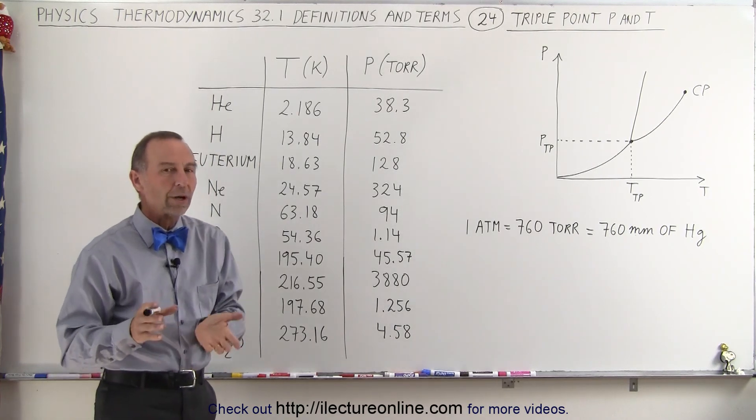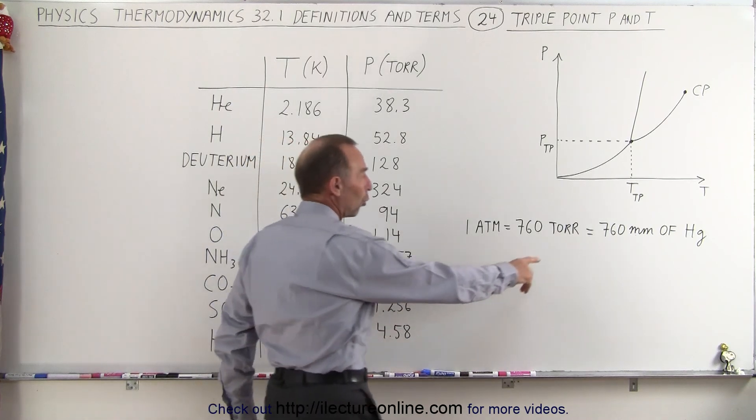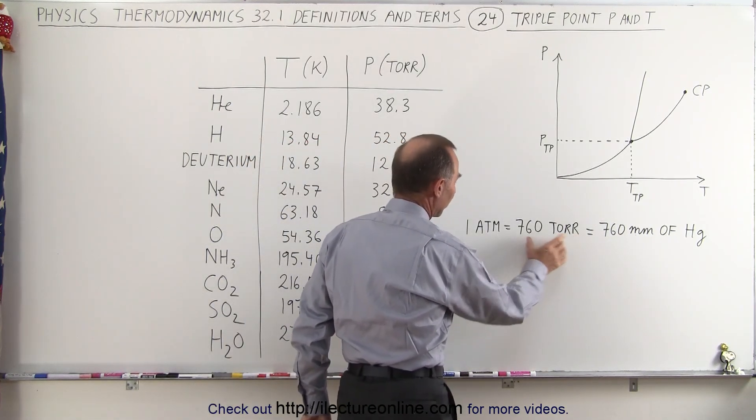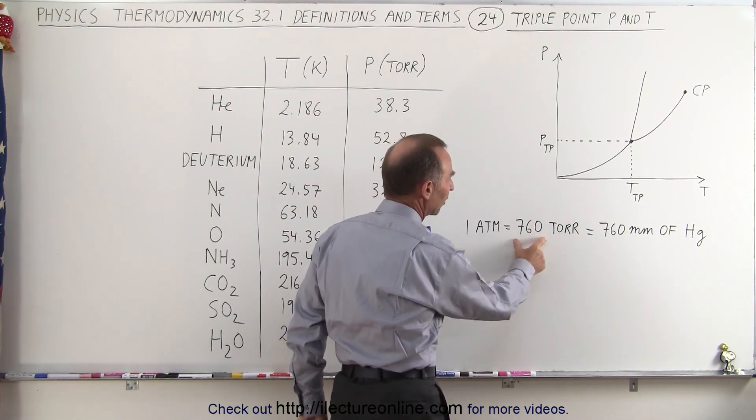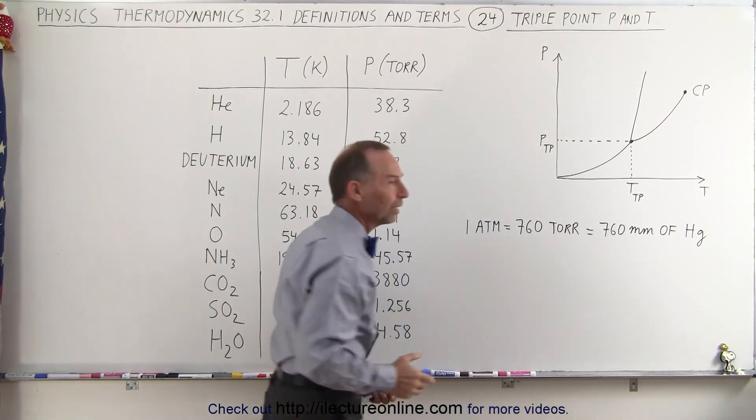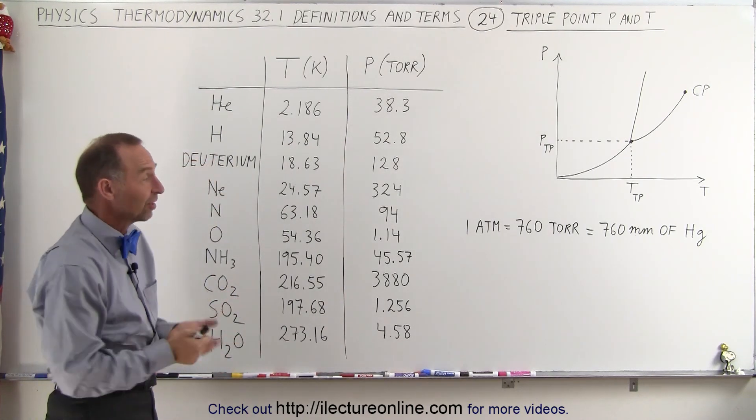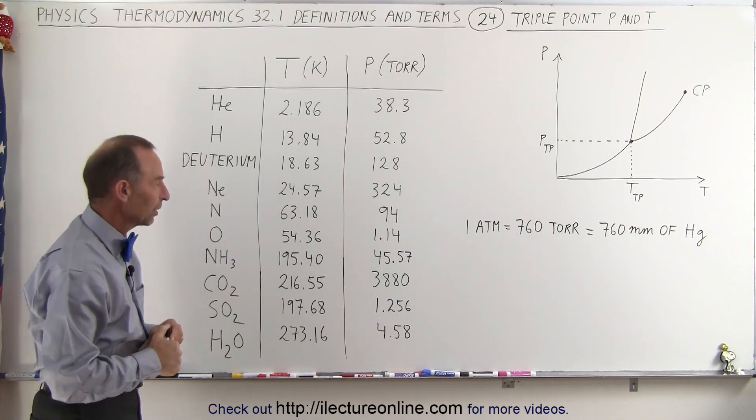Now, let's look at water because that way we can get a feel for it. Notice that tor is a unit of pressure and one atmosphere is equal to 760 tor, which means 760 millimeters of mercury. The atmospheric pressure can push up a column of mercury of 76 centimeters or 760 millimeters.